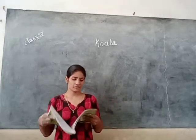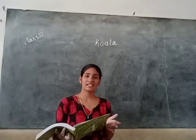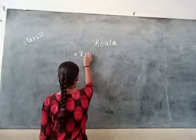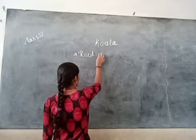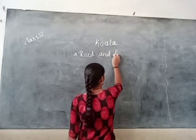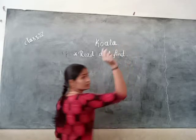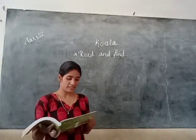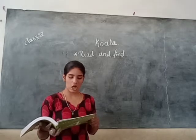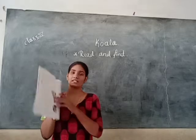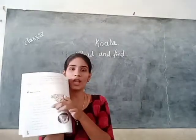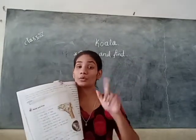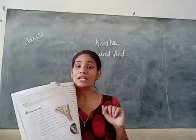What is the first question? So first one is read and fact. The first activity is: put a tick or a cross against each statement. So here some statements are given to us. We have to put the right mark or cross mark.